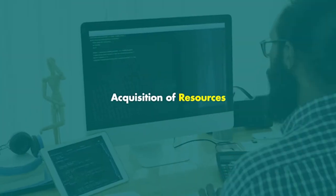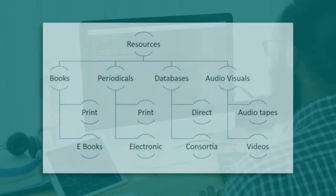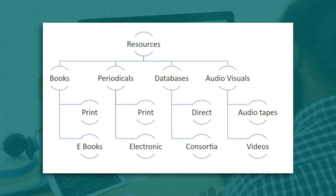This is a typical acquisition process. Resources are categorized into four areas: books, periodicals, databases, and audiovisuals. Under books, it is further divided into print and non-print, meaning e-books. Under periodicals, it is print and electronic periodicals. Under databases, it is direct or through consortia. And under audiovisuals, it is audio tapes or videos.